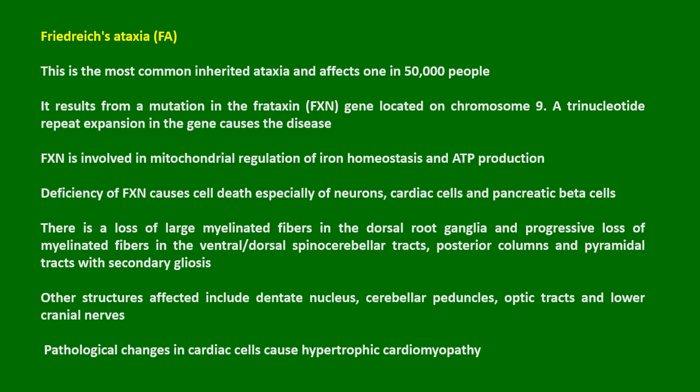There is loss of large myelinated fibers in the dorsal root ganglia and progressive loss of myelinated fibers in the ventral and dorsal spinocerebellar tracts, posterior columns, and pyramidal tracts with secondary gliosis. Other structures affected include the dentate nucleus, cerebellar peduncles, optic tracts, and lower cranial nerves.